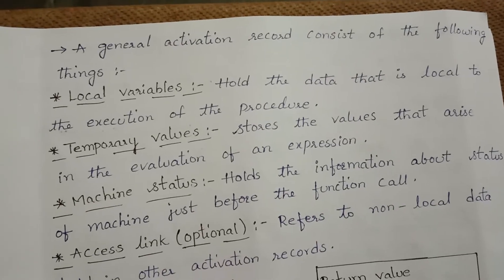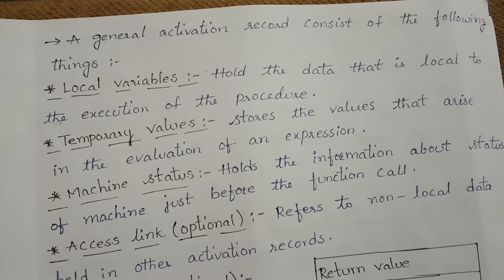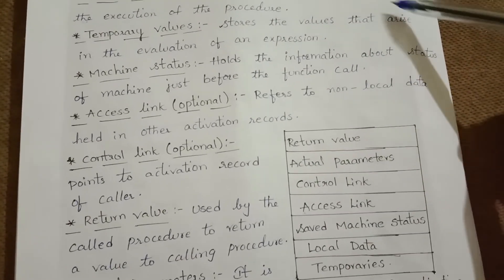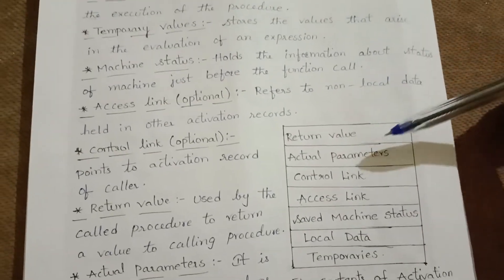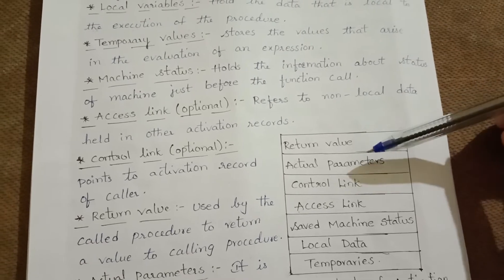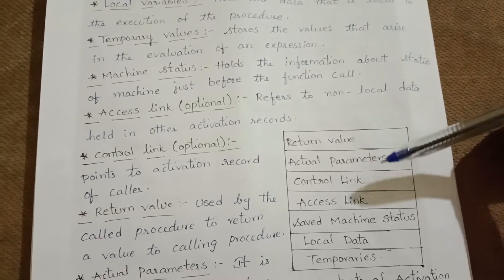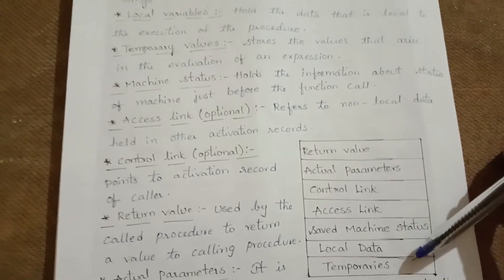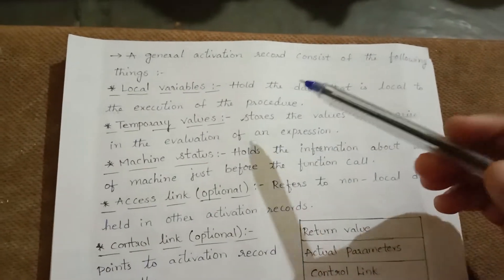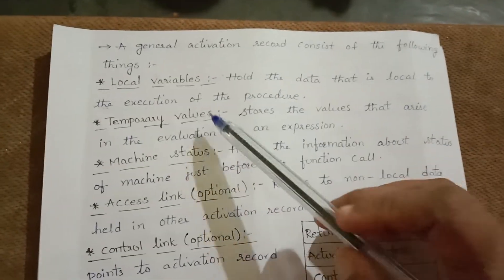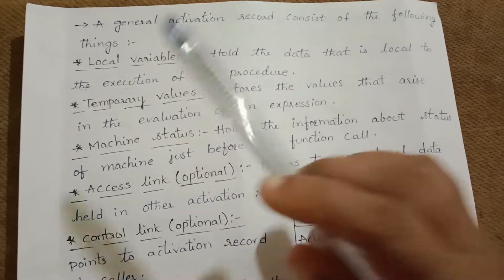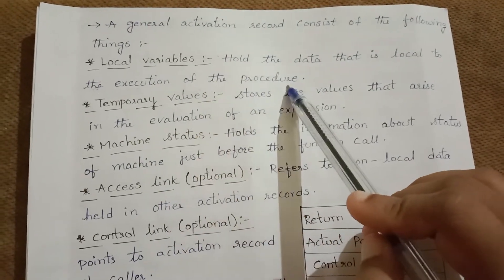A general activation record consists of the following components: return values, actual parameters, control link, access link, saved machine status, local data, and temporaries. Local variables hold the data that is local to the execution of the procedure.